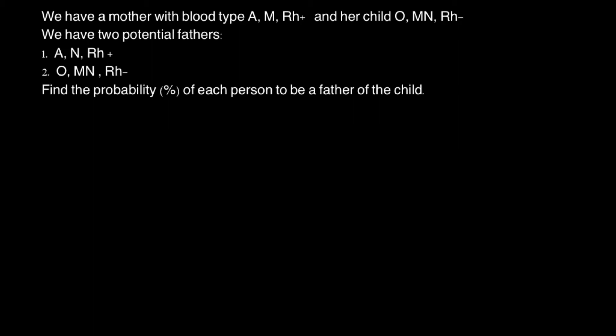So here is the problem. We have a mother with blood type A, MN, and Rh positive, and her child who is O, MN, and Rh negative. We have two potential fathers, and we are given their phenotypes. We need to find the probability of each person being the father of the child. If you feel you can solve this problem on your own, I recommend you stop the video here, try to solve it, and then compare your answer with my explanation.